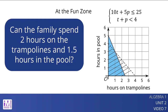Can the family spend 2 hours on the trampolines and 1.5 hours in the pool? No. These two times do add up to less than 4 hours, but to find out the cost, we need to calculate 10 times 2 plus 5 times 1.5, which is 27.5 and is more than the budget. It may be easier to know that this combination is not an option by noticing that the point 1.2 comma 1.5 is in the region with line shading but not in the region with solid shading. This means it meets one constraint but not the other.